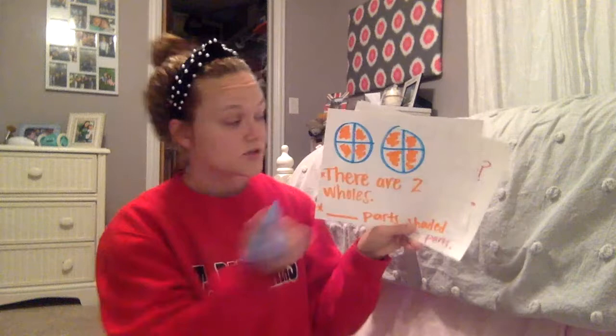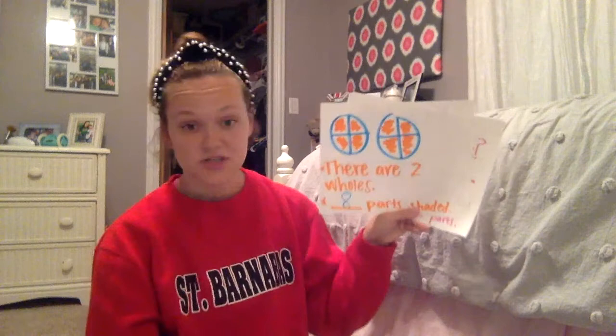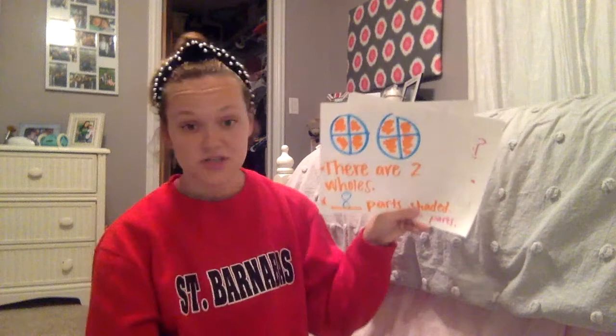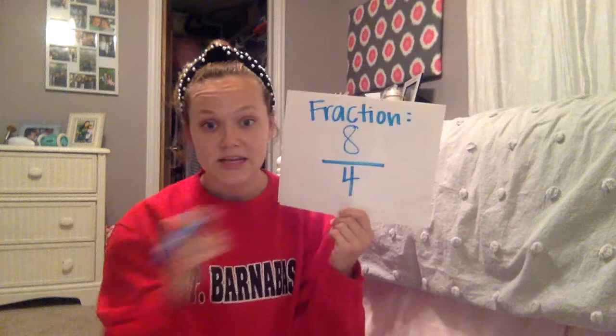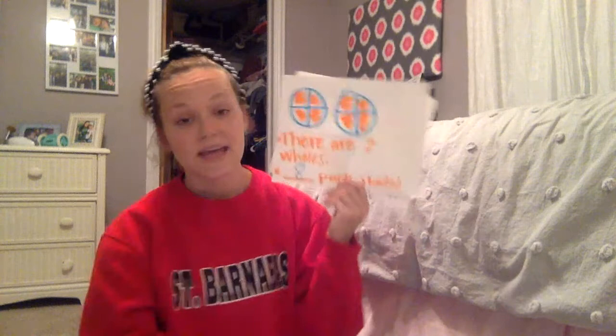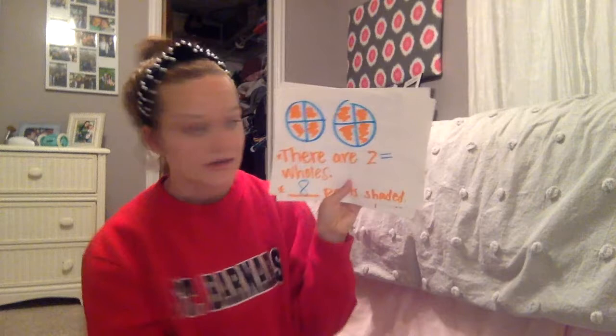How many parts are shaded total? Let's count: one, two, three, four, five, six, seven, eight parts are shaded. That's going to be our numerator. Eight parts are shaded, and each shape is split into fourths, so our fraction for this picture is eight-fourths. Another way we can write two is eight over four — eight-fourths — because I have eight-fourths colored in.